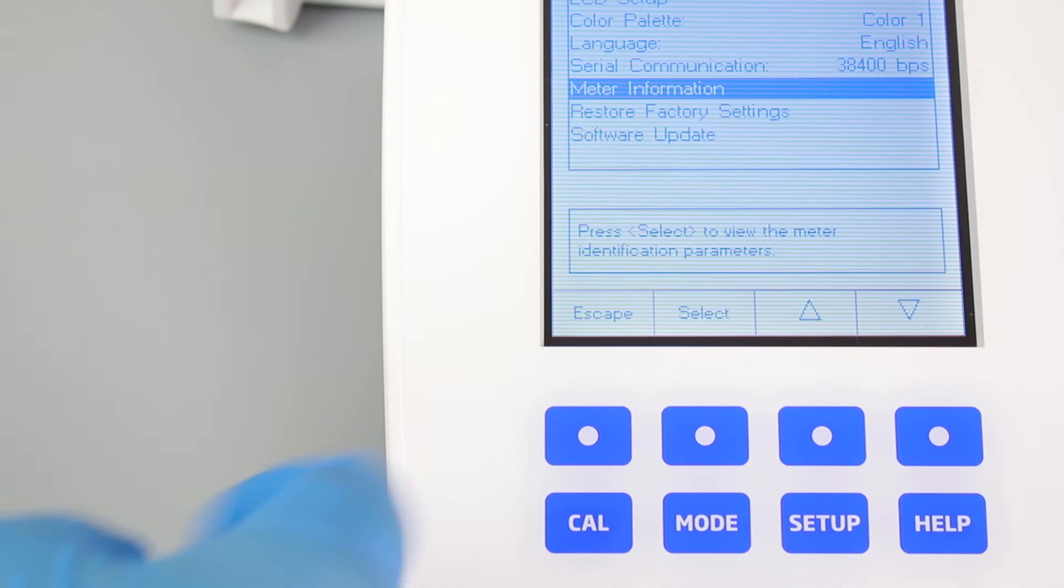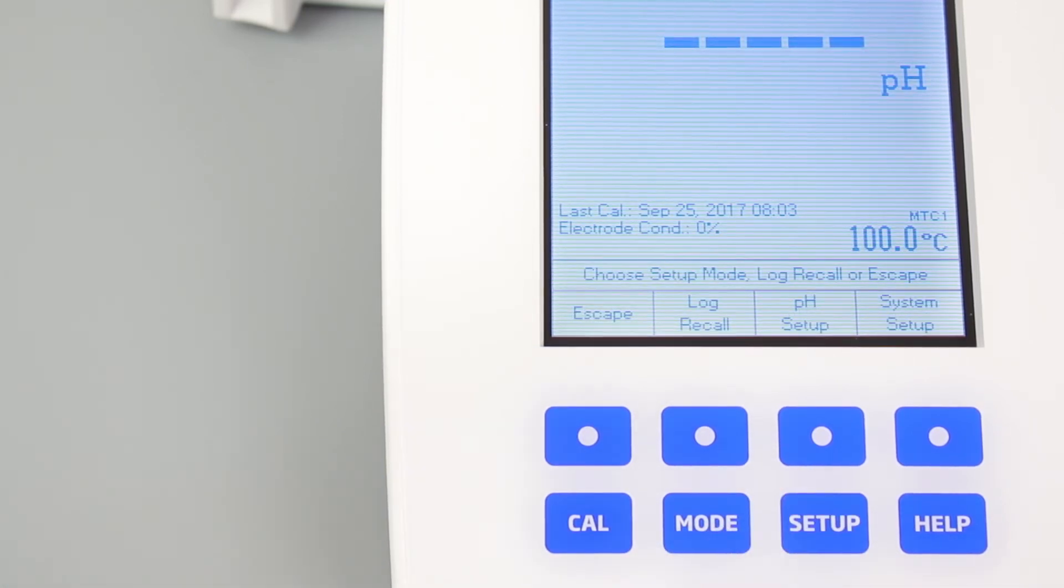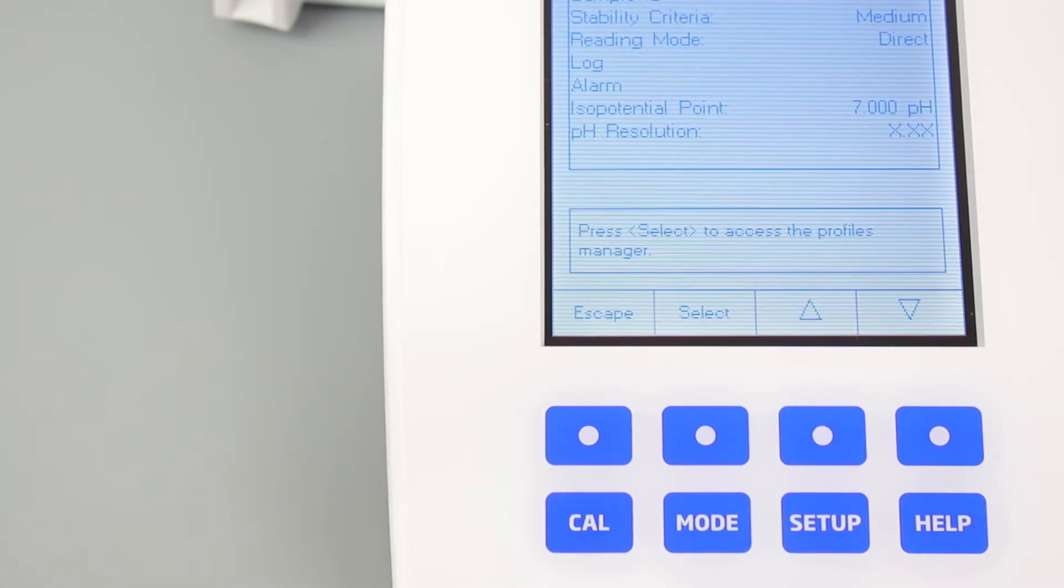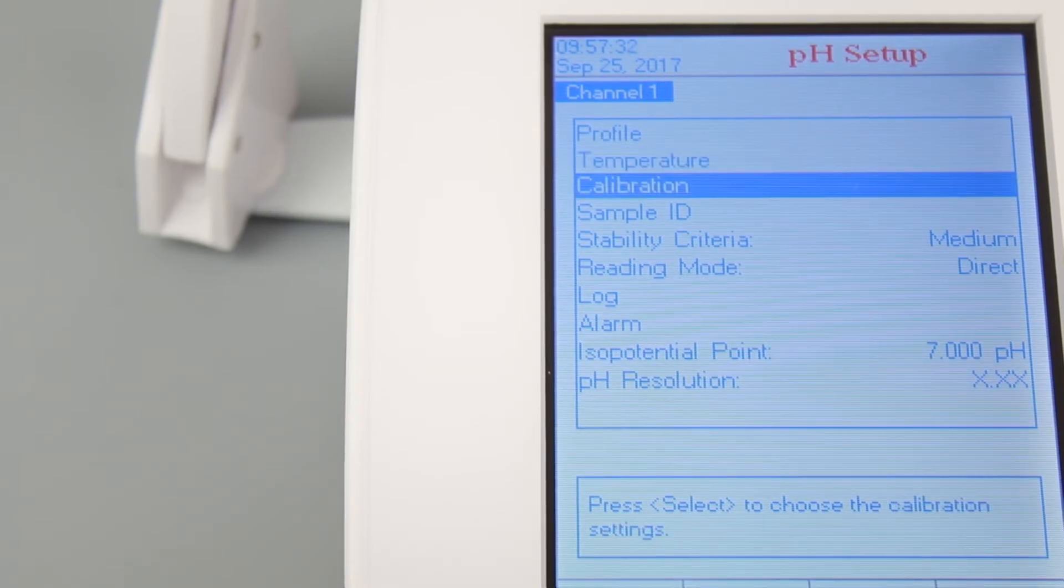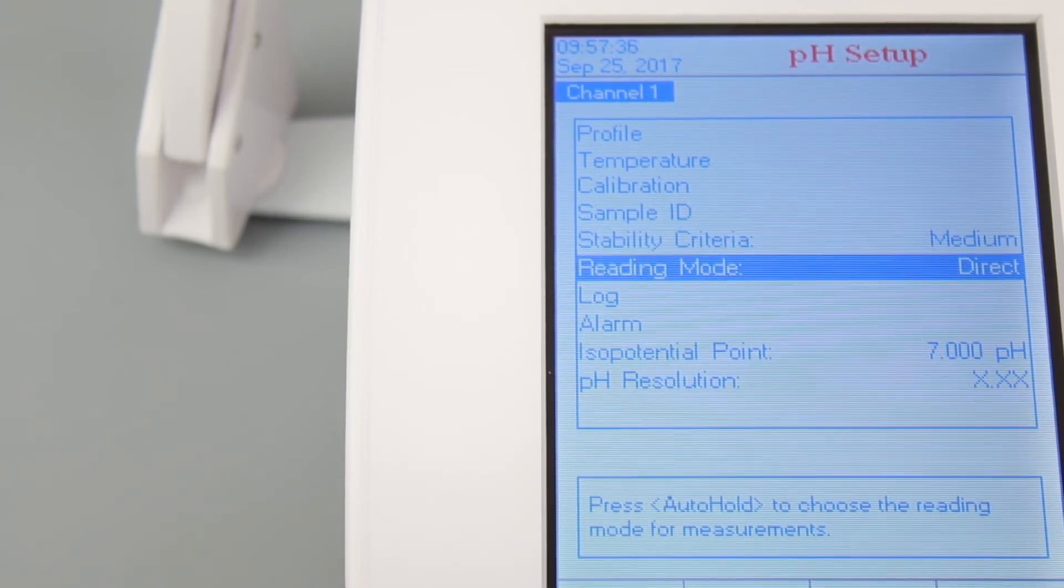Once you have set your preferences, hit ESC, Setup, and then pH Setup. This area of the Setup menu is where you can change your temperature compensation settings, calibration preferences, and calibration reminders. The pH Setup menu is a great way for you to ensure best practices for your lab are being followed.